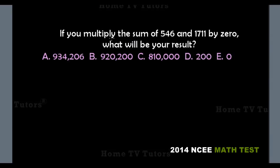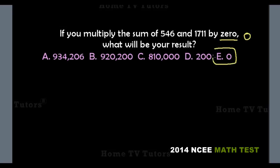If you multiply the sum of 546 and 1711 by 0, what will be your result? When you multiply any number by 0, you always get 0 — that is the rule. So the answer option E is the right answer.